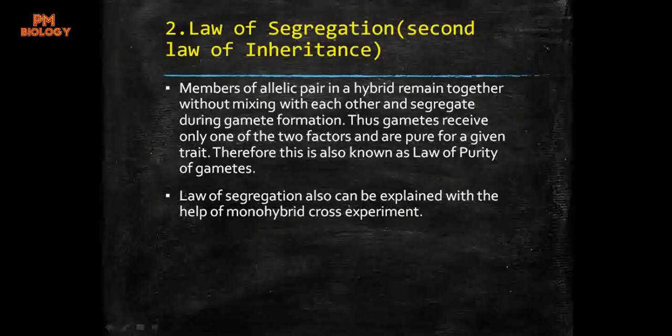The appearance of the recessive trait in the F2 generation proves this law. All sexually reproducing higher organisms are diploid (2n) with two sets of chromosomes, and gametes are haploid (n) with one set of chromosomes. Therefore this law of segregation is universally applicable and acceptable.